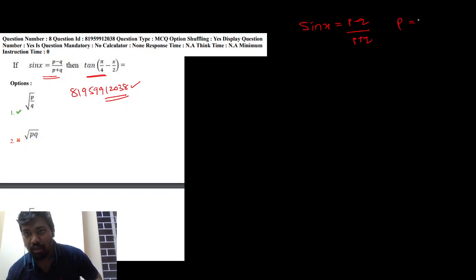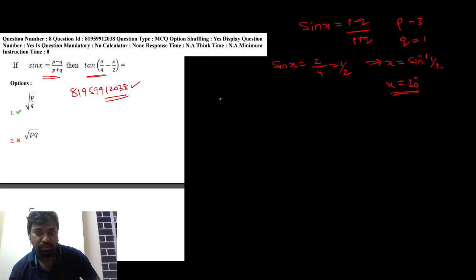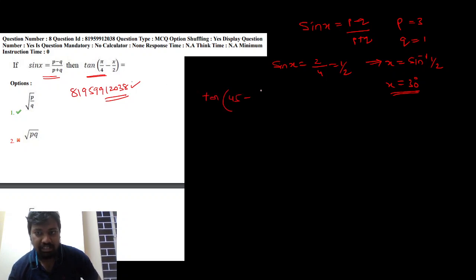Let me assume p is equal to 3, q is equal to 1. So sin x is equal to (3 minus 1) / (3 plus 1) = 2/4 = 1/2. So the value is equal to sin inverse of 1/2, which is equal to 30 degrees. Then 30 degrees corresponds to π/4 minus x/2. tan(45 minus x/2): x is equal to 30, 30/2 = 15.